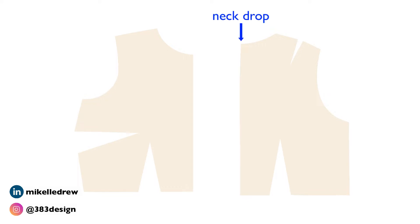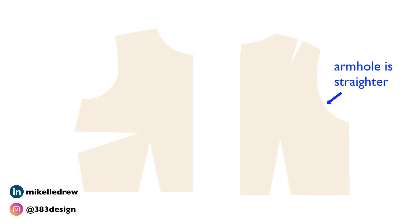The difference between the front and back bodice is the neck drop. If you notice, the neckline isn't as low on the back, there's no side dart, and the armhole isn't as curvy.